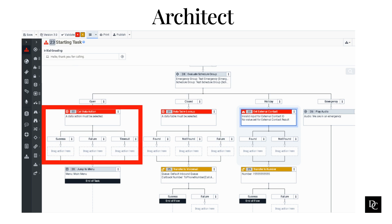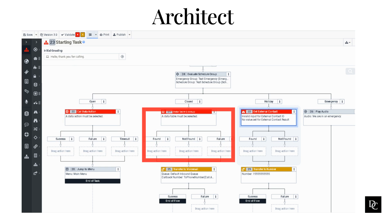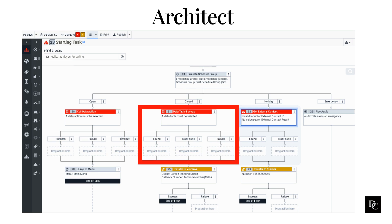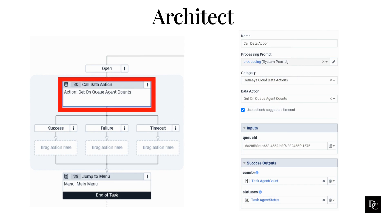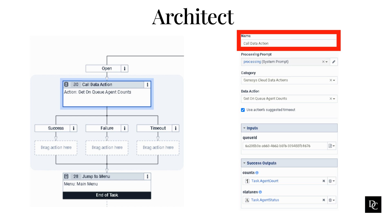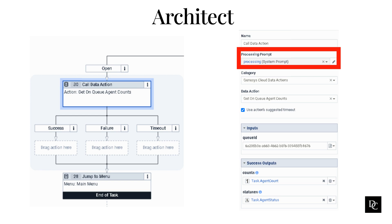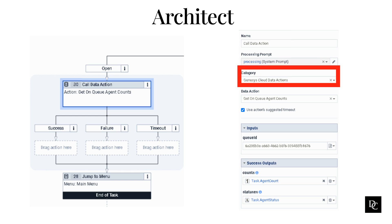Call Data Action is in the data category of the Task Editor's Toolbox. When the flow runs, the data action sends input to a web service and retrieves data back from the web service. We are going to use the Get On Queue Agents Counts data action. After dragging the call data action to the call flow, you are able to set some configuration items. Type a distinctive name for the call data action — the label you enter here becomes the action's name displayed in the task sequence. Select an audio prompt that plays during longer call data actions to let callers know the interaction is experiencing extended processing times. This option confirms for the user that the interaction did not disconnect but is still in progress.